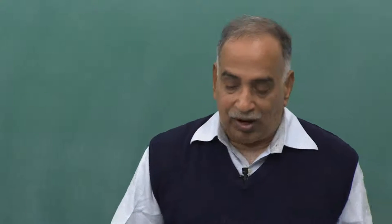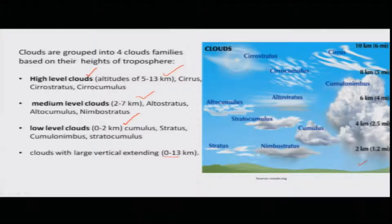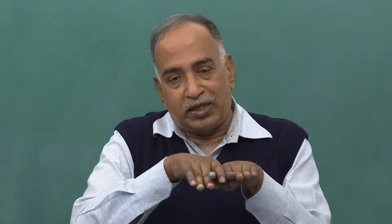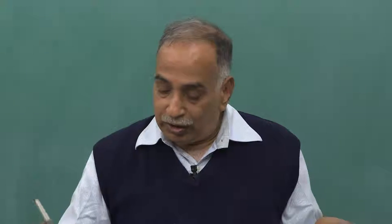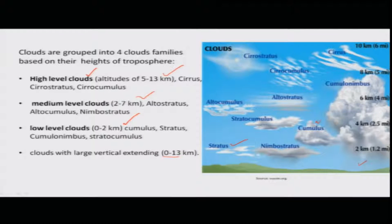The lowermost clouds are called stratus clouds. Stratus clouds are flat-bottomed clouds. Cumulus clouds are those clouds which puff up on the surface. Cirrus clouds are fragmented portions of clouds.